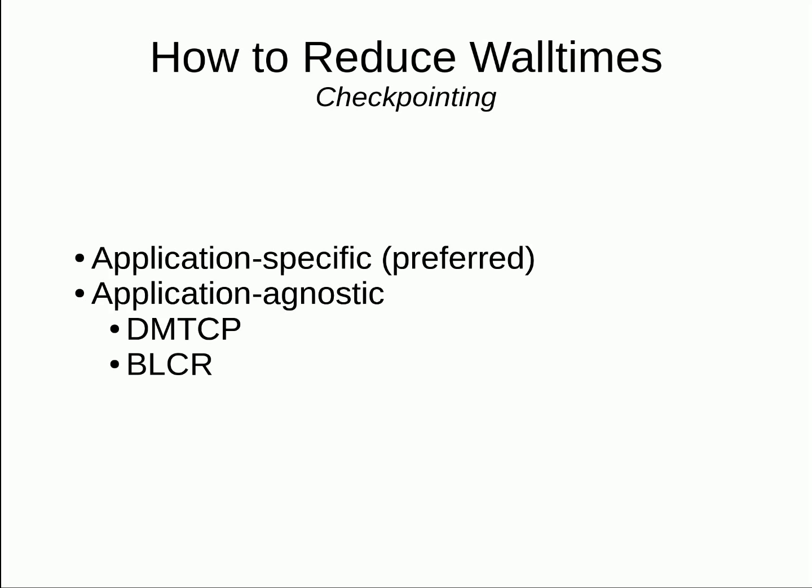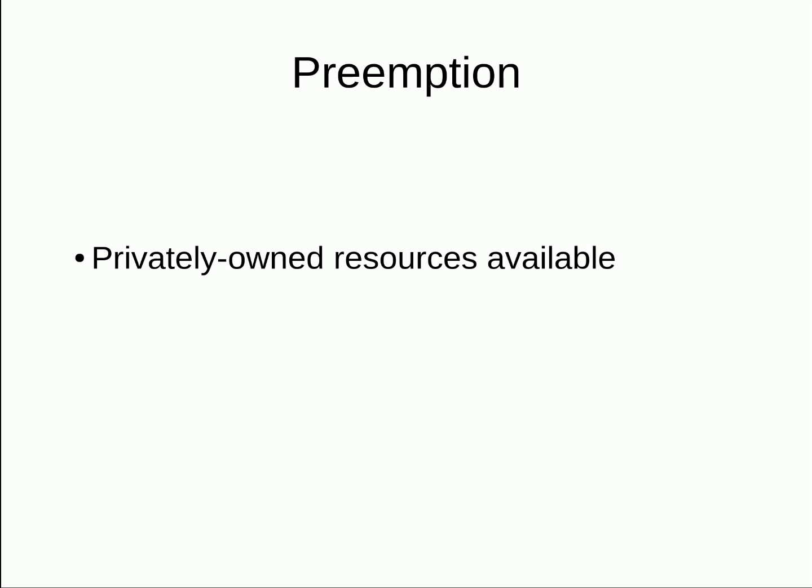One other way to acquire more resources is to use preemption. BYU manages some privately owned hardware that most users don't usually have access to. You may access these resources by making your jobs preemptible, meaning that they can be preempted or canceled at any moment by the owner of the resources. There are currently no limits for preemptible jobs. If no resources are in use whatsoever, preemption would allow you to use 100% of the resources until others start submitting jobs.